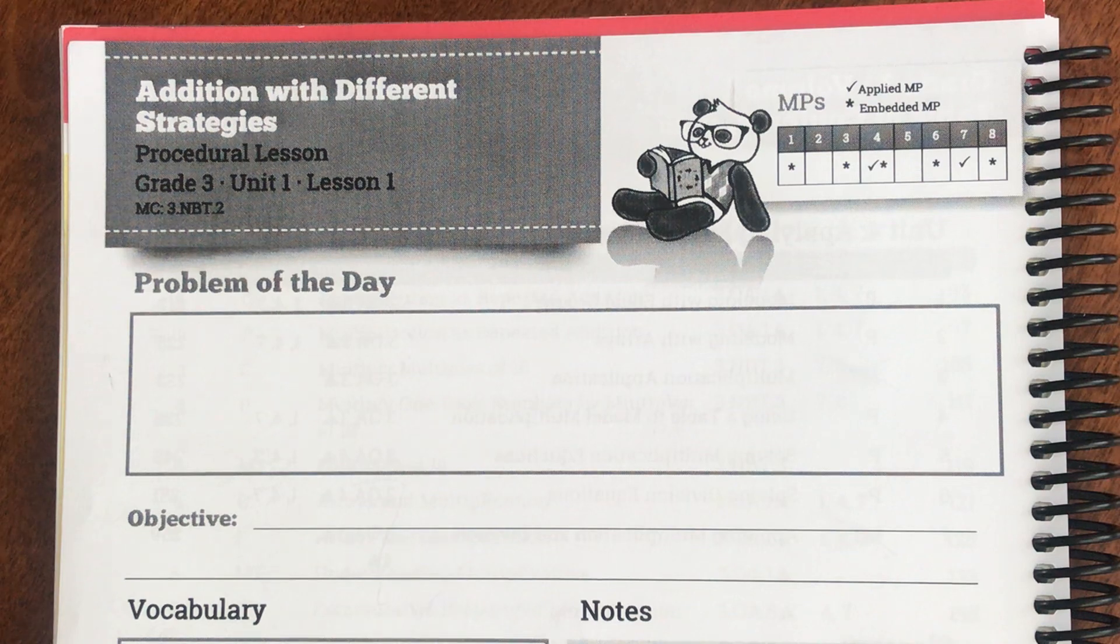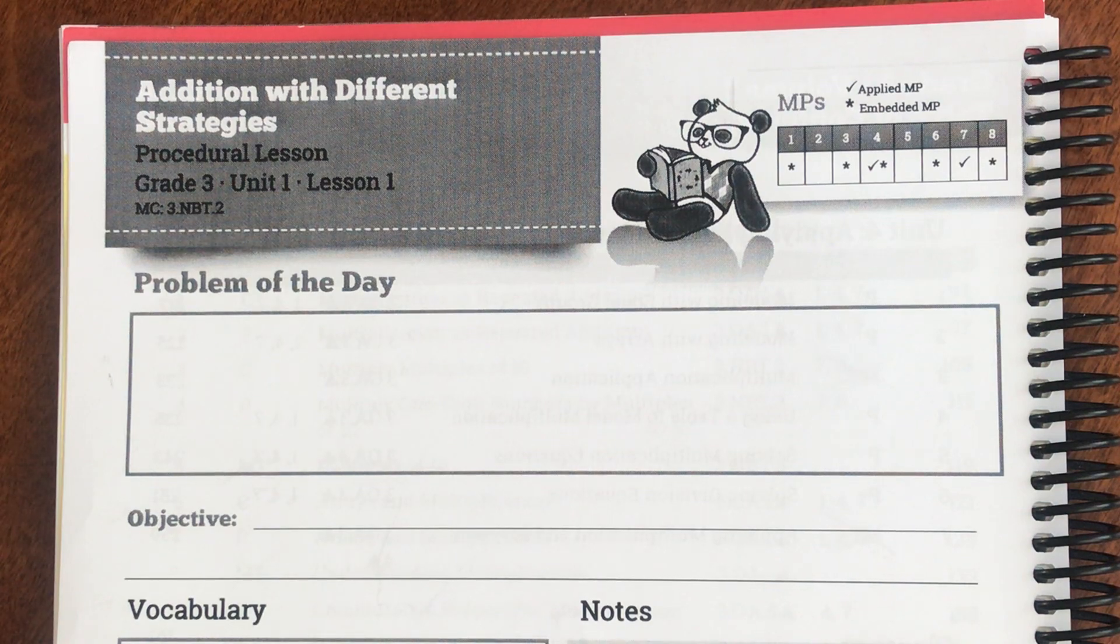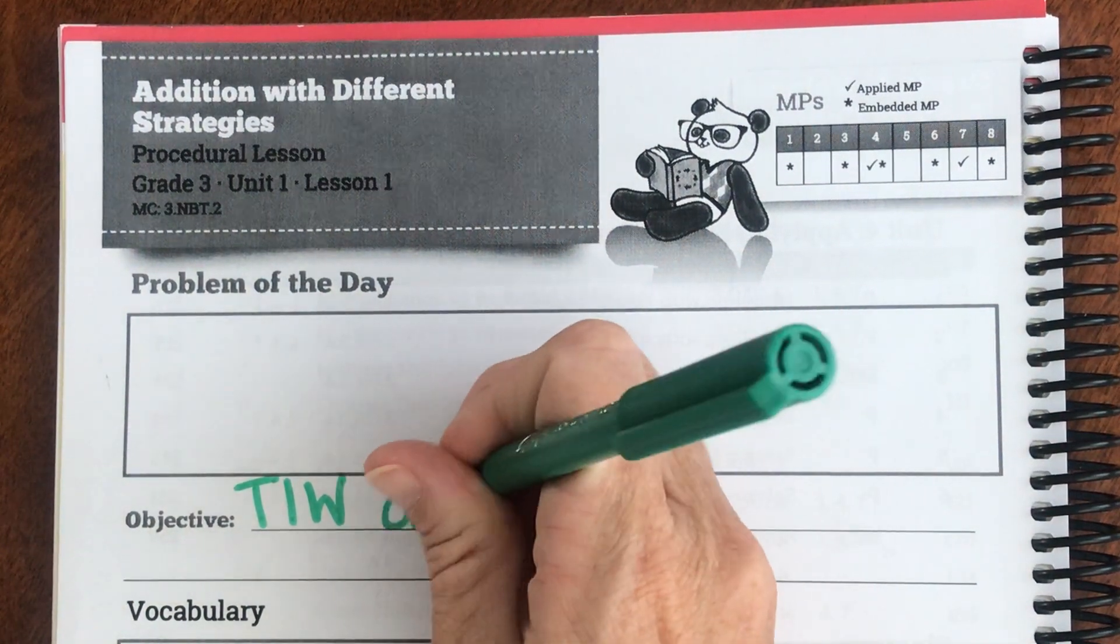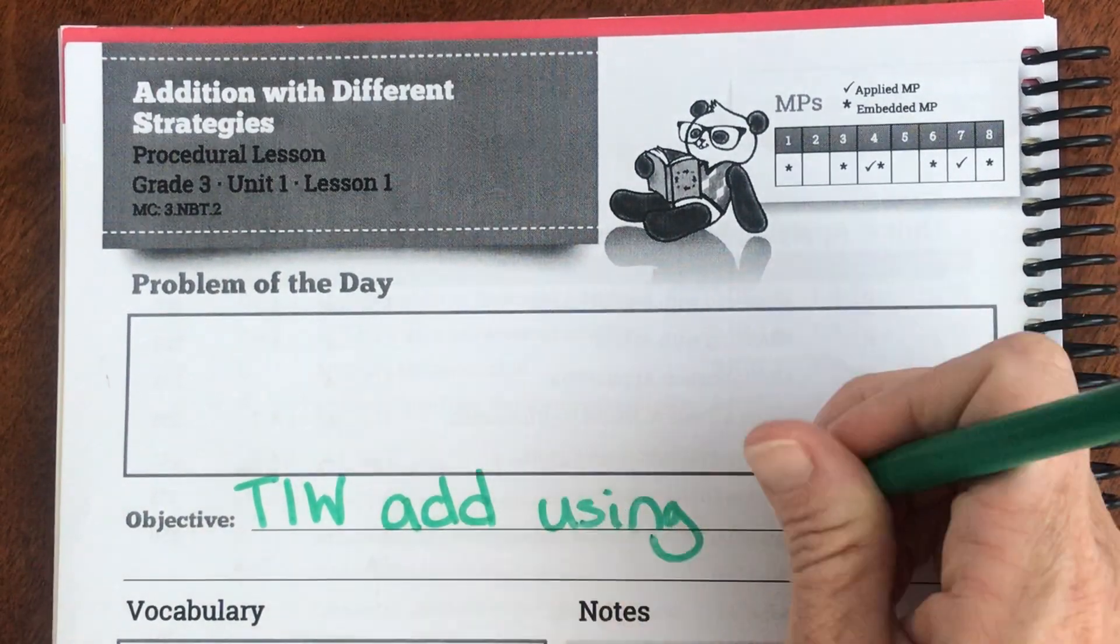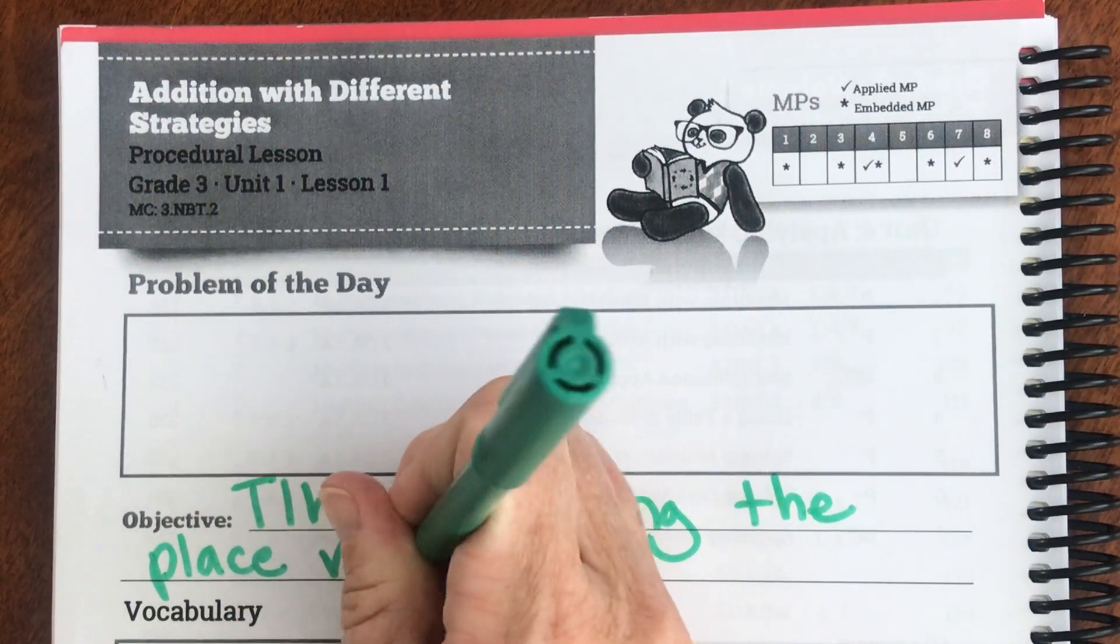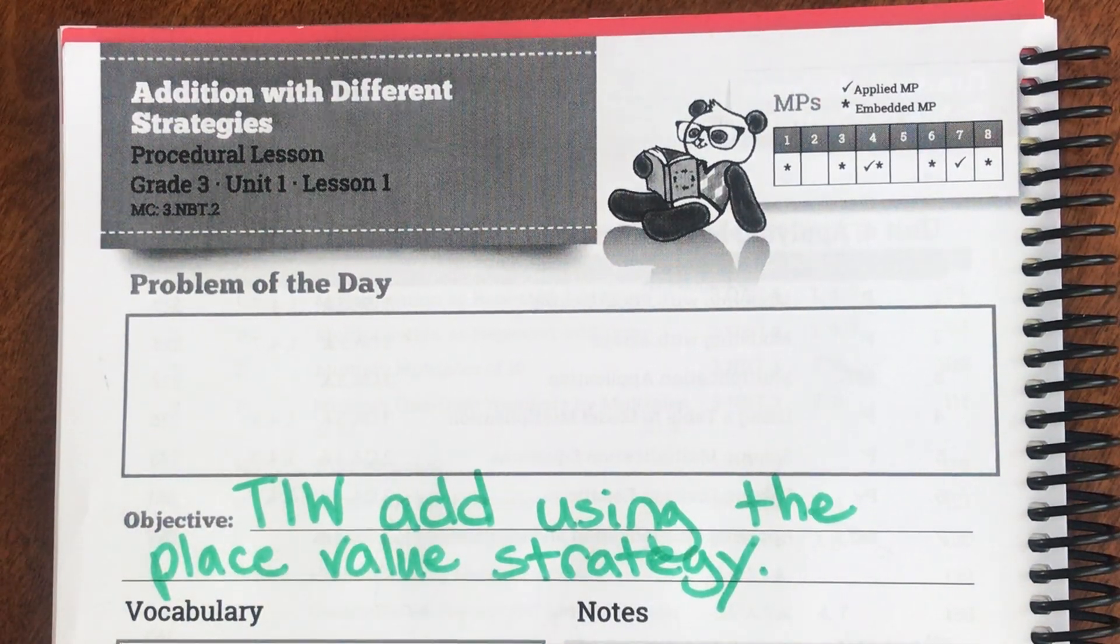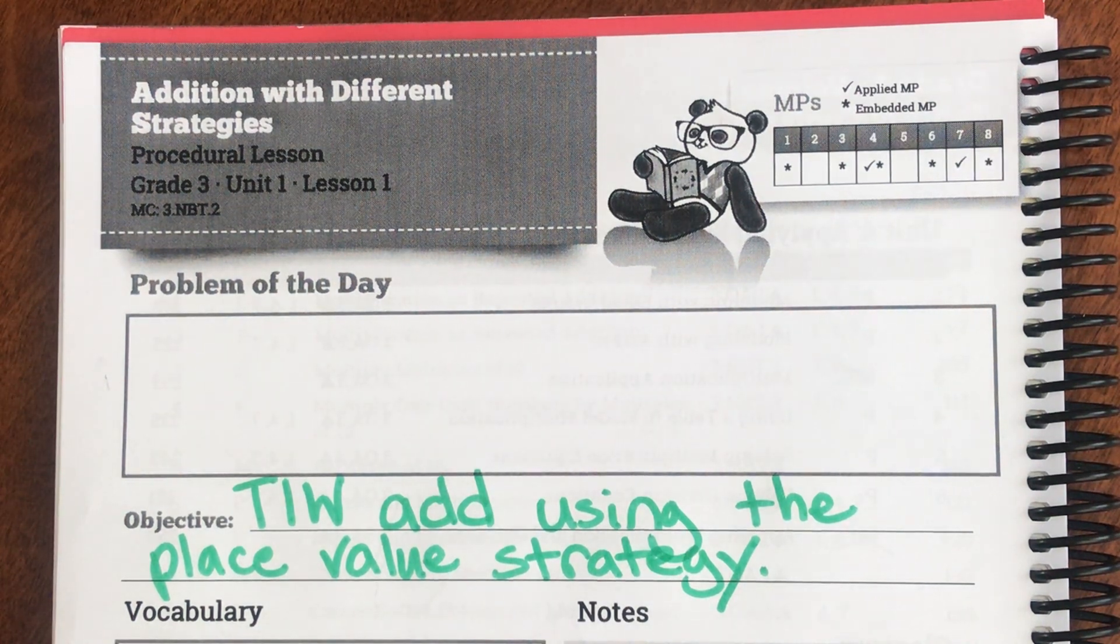An objective is your goal. What do we want to learn or know by the end of today? So our objective, we're going to say is today I will, but instead of writing those words we're going to shorten it and we're just going to put TIW. So today I will add using the place value strategy.